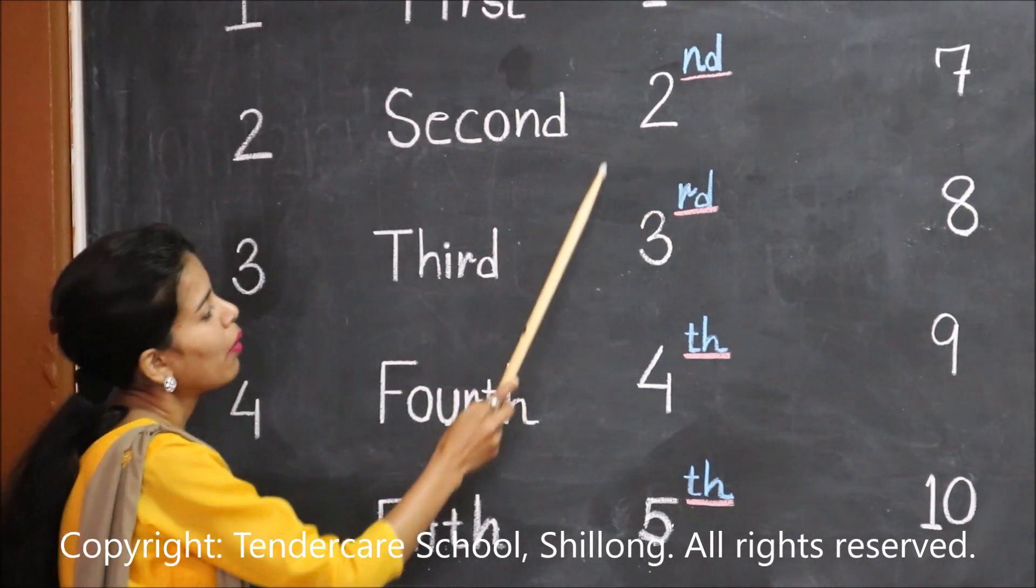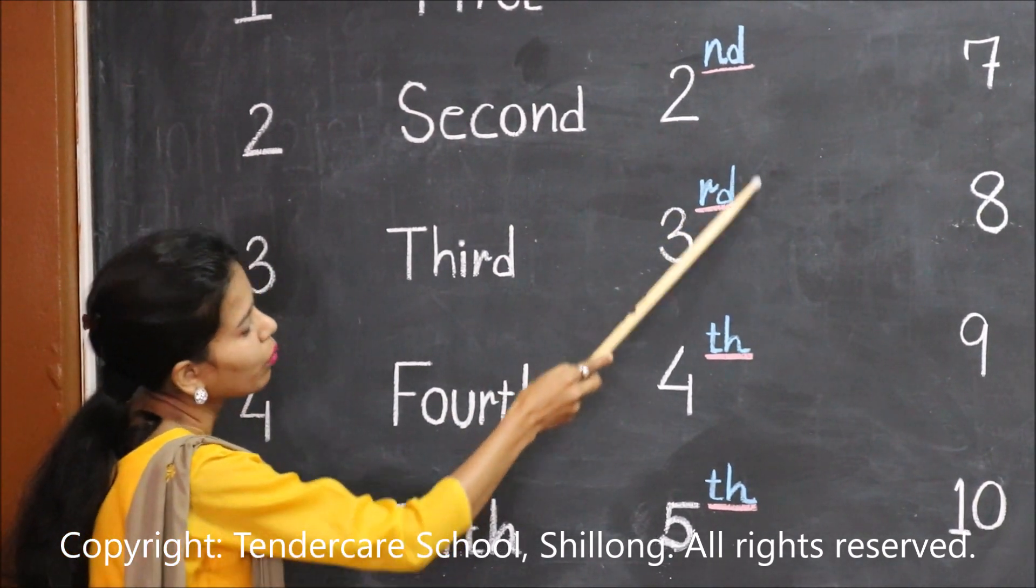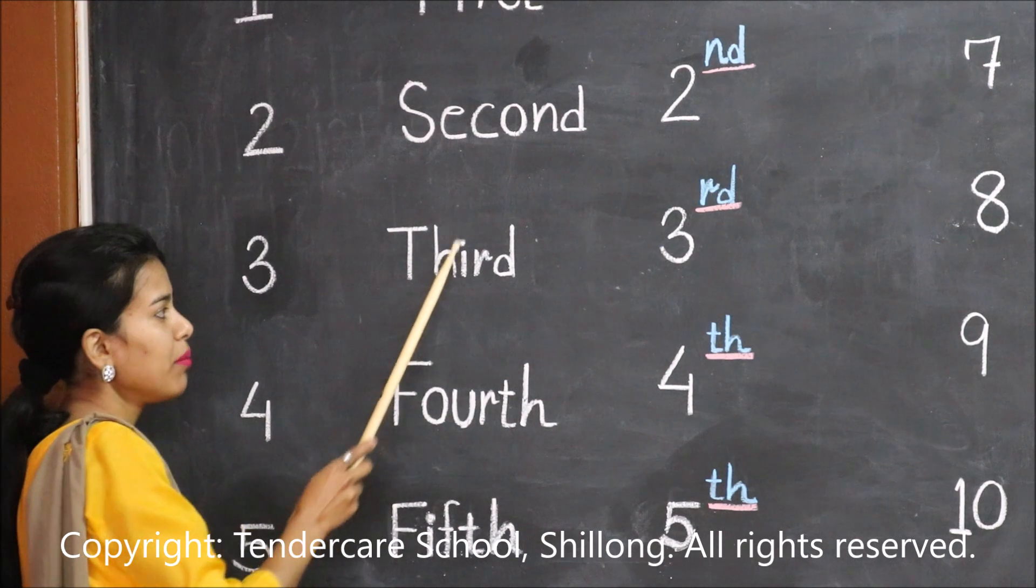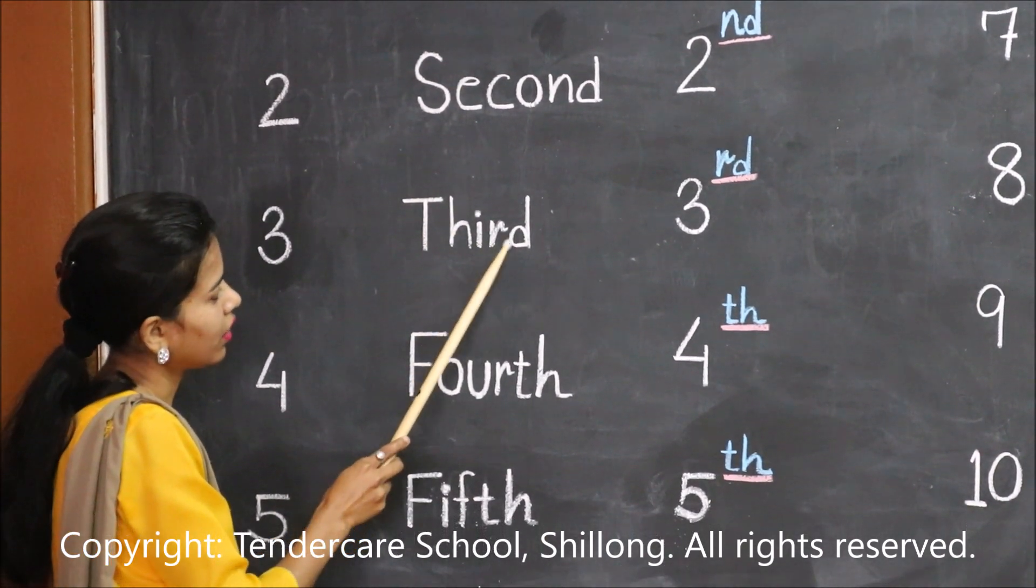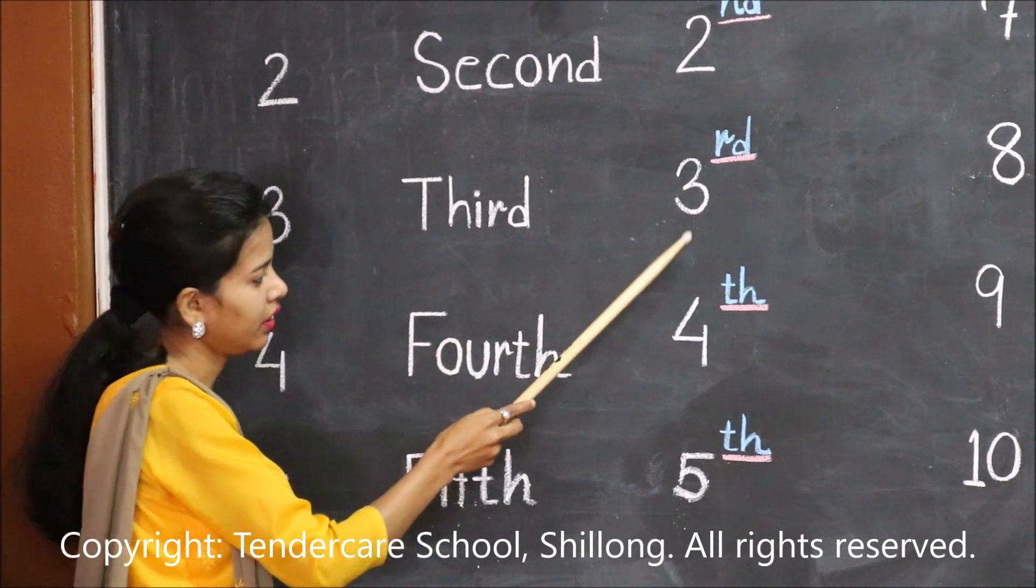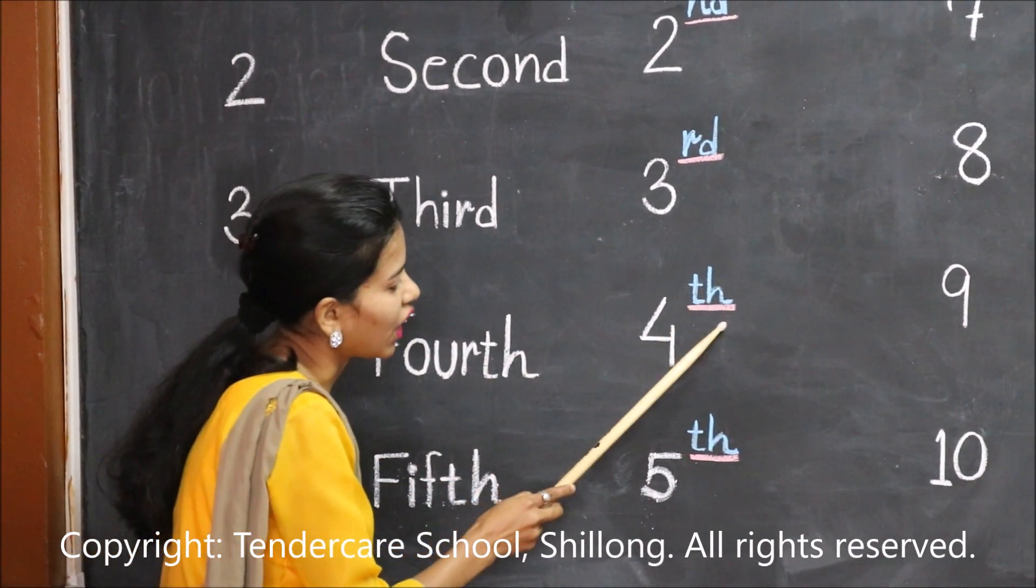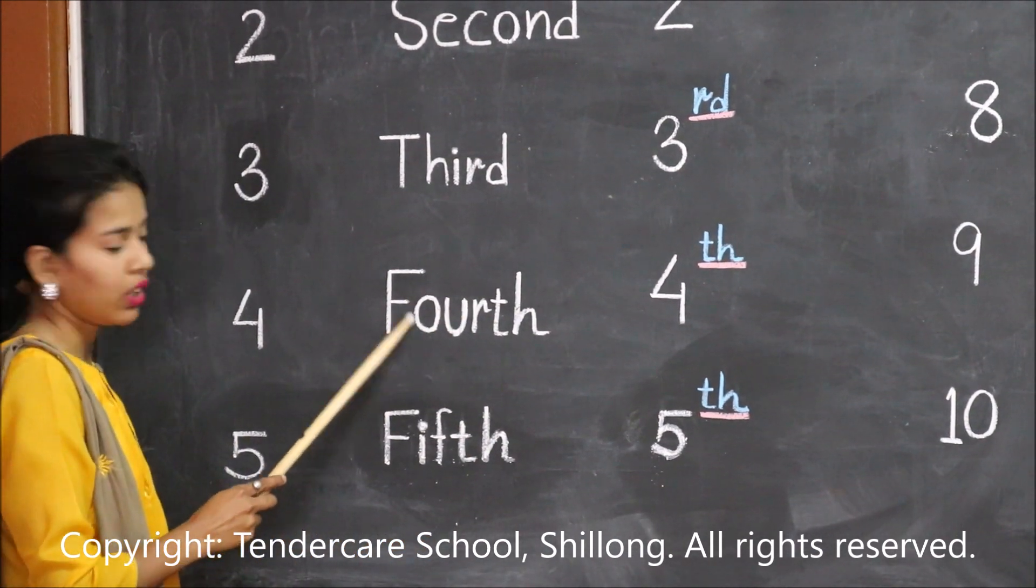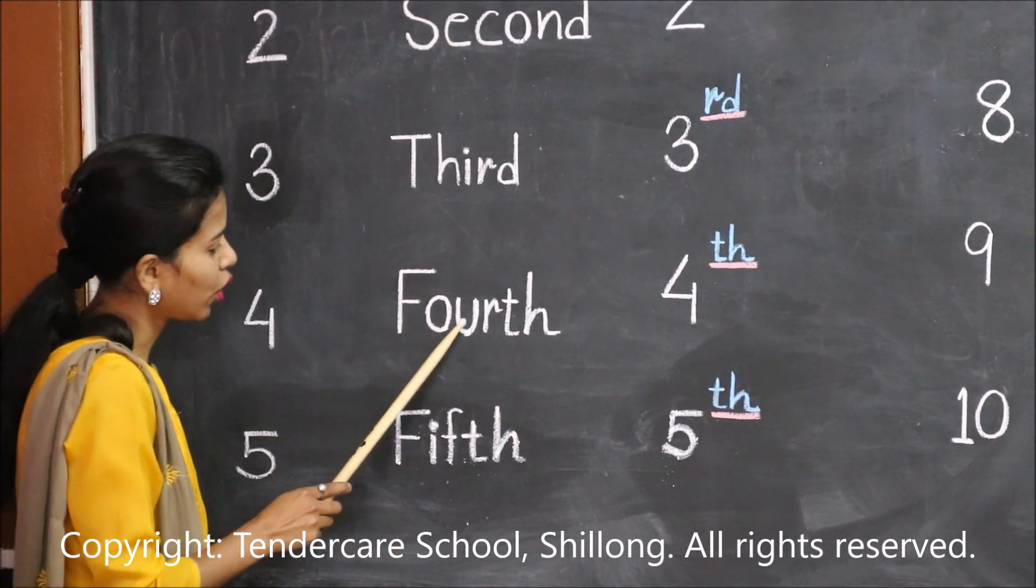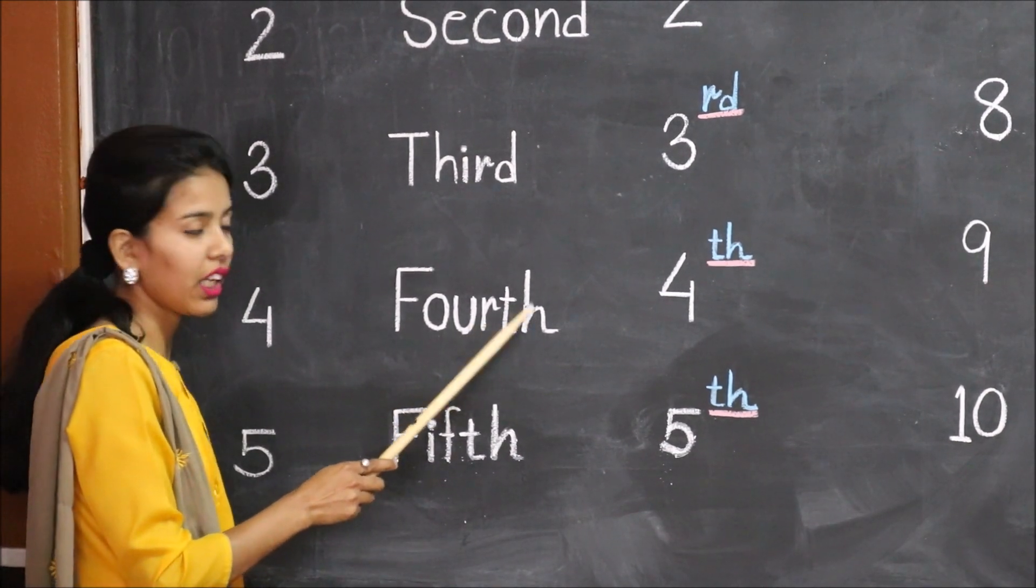second. When we add 'rd' with three, it becomes third. T-H-I-R-D, third. When we add 'th' with four, it becomes fourth. F-O-U-R-T-H,